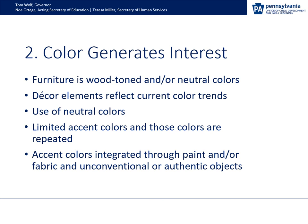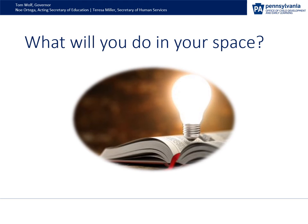A neutral background for your classroom with a few well-chosen accent colors will create interest that's focused on the children and the adults who inhabit the space. Some of the items within this principle are: furniture is wood-toned or neutral colors; decor elements reflect current color trends; use of neutral colors; limited use of accent colors, but those colors being repeated throughout; and accent colors being integrated through paint or fabric and unconventional or authentic objects. You want to use color intentionally — it doesn't mean get rid of all the colors, but use it purposely. Too many primary colors can negatively impact behavior. Think about nature's palette — look outside the classroom door and see the beauty of nature.